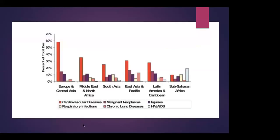This graphic shows percentage of total deaths, with red representing cardiovascular disease, followed by malignant neoplasms, injuries, respiratory infections, chronic lung diseases, and HIV-AIDS. The authors note that sub-Saharan Africa is an exception in the transition — most places see stroke first then CVD, but sub-Saharan Africa is still transitioning from HIV, and projections suggest that following HIV, the leading cause of death will be CVD.